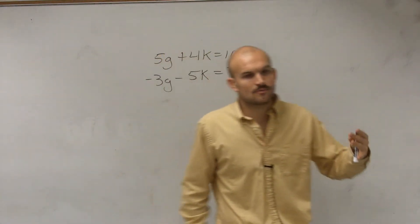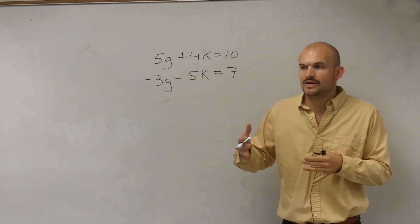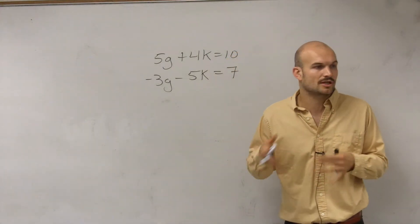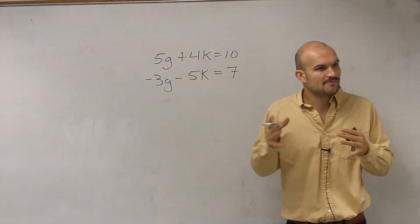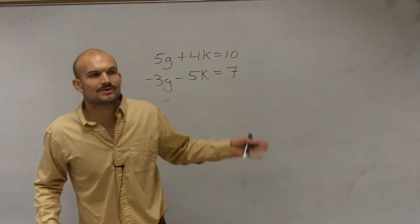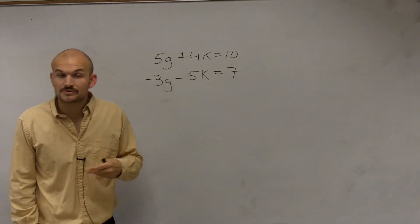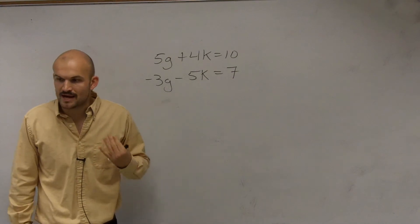So the next thing we looked at was, what are ways we can make them the same? And we worked usually with multiplying one equation or the other by a multiplier. And usually when we multiplied one equation by a multiplier, we were able to get the same coefficients. However, what we're going to have to do for this problem, we're going to have to multiply both equations by a multiplier.